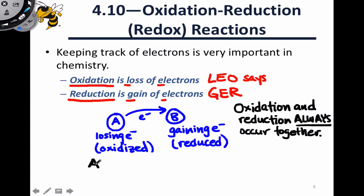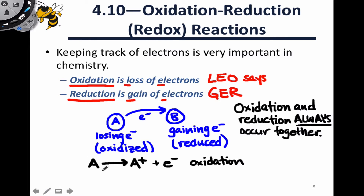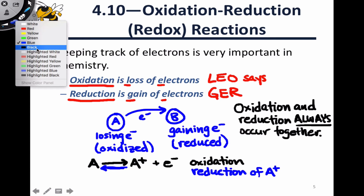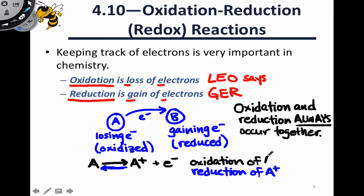For example, we can think about a neutral atom A losing an electron to form A+, since electrons are negatively charged, and the free electron — where a recipient is implied but we don't want to specify exactly what that recipient is, as it may vary from context to context. This is an oxidation process because species A is losing an electron. If we think about the reverse direction, in which A+ combines with an electron to form A, that's a reduction — more specifically, a reduction of A+, while the forward direction is an oxidation of the neutral species A.